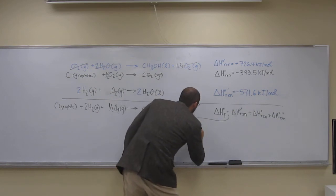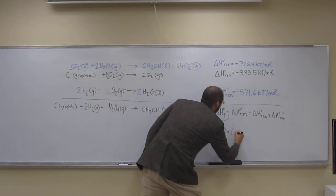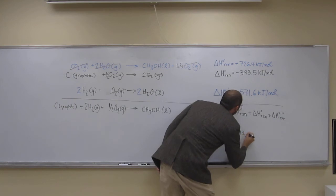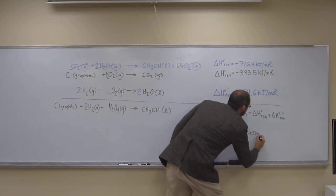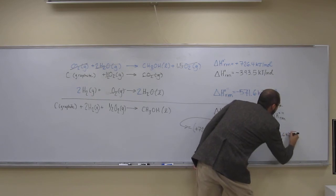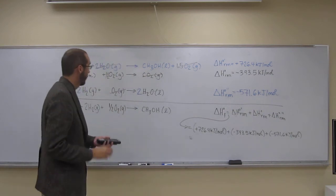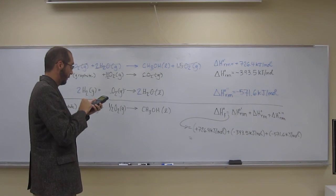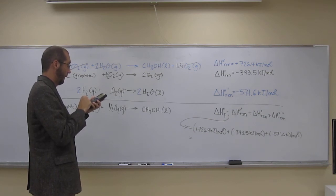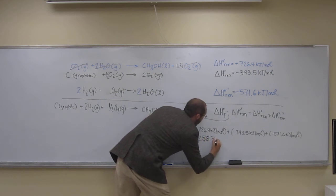Heat of the first reaction is going to be plus 726.4 kilojoules per mole plus a negative 393.5 kilojoules per mole, plus a negative 571.6 kilojoules per mole. So 726.4 minus 393.5, subtract 571.6 from that, and I get negative 238.7 kilojoules per mole.